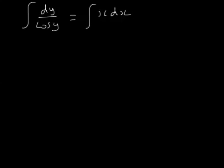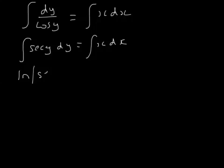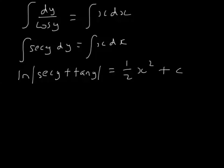Now we integrate 1 over cos y. Well, 1 over cos y is sec y. Integrating sec is a standard function in the formula book: it's log sec plus tan. Integrating x is a half x squared. We only need one constant of integration, so here we have the solution of the differential equation.